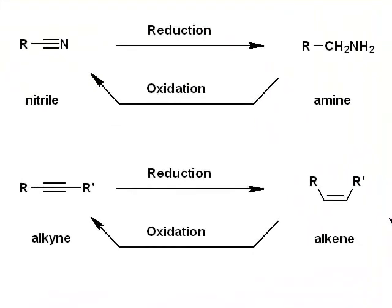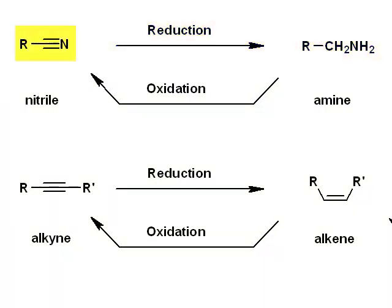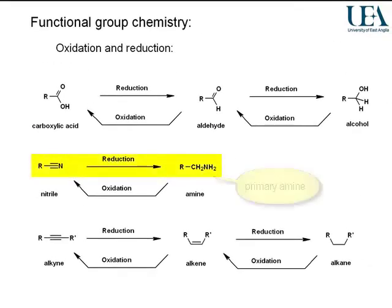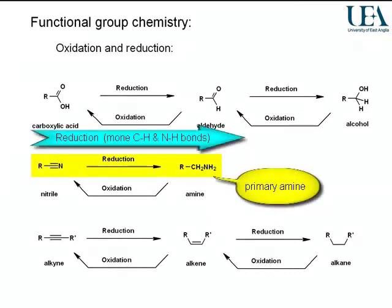The nitrile has a triple bond to nitrogen. If you sequentially add hydrogens to that until you've used up all the double bonds, you still have an R-group attached to carbon, attached to nitrogen. Making a primary amine from a nitrile is a reduction process, and that's quite a common way to make amines.